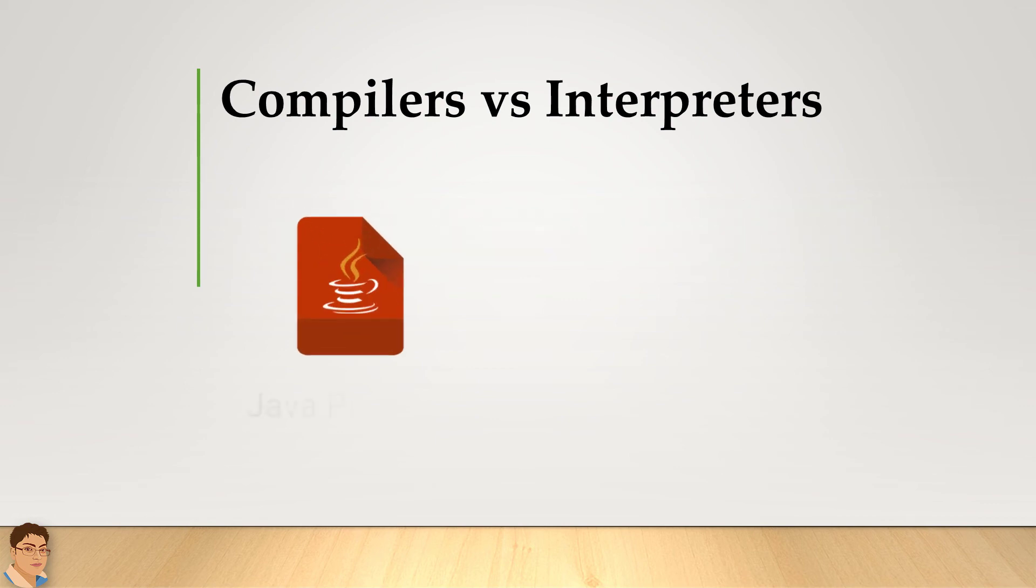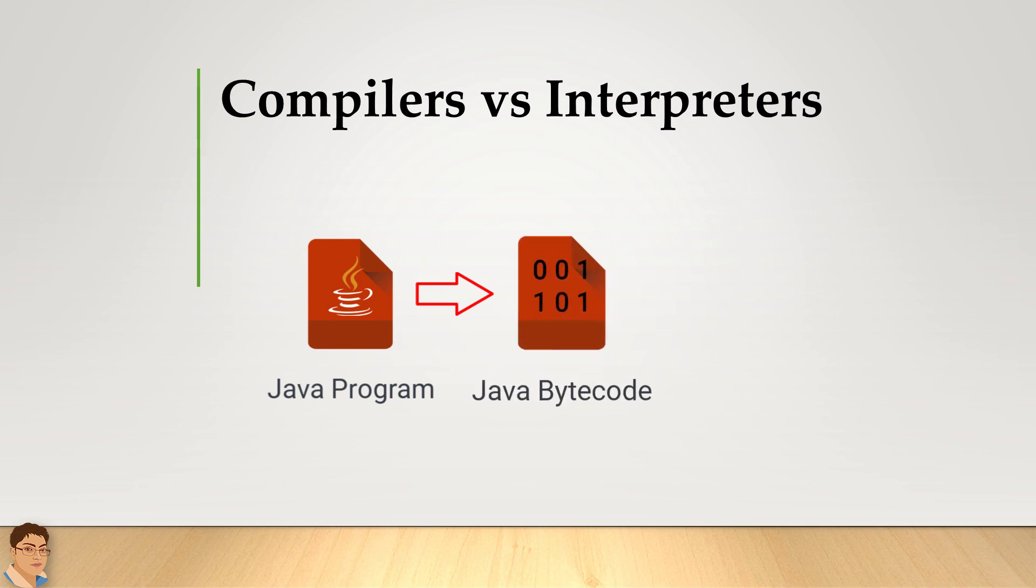Note that Java programs are compiled as well as interpreted. The Java compiler converts Java code to an intermediate form called Java bytecode, which is then interpreted by Java Virtual Machine or JVM to run the program.